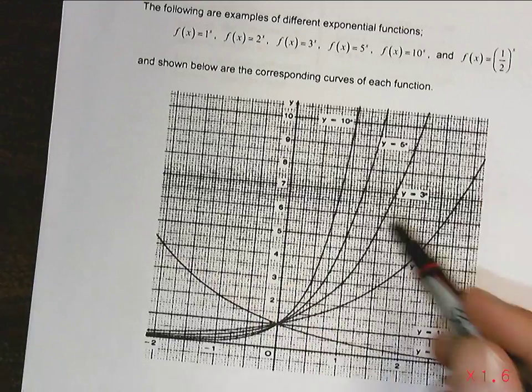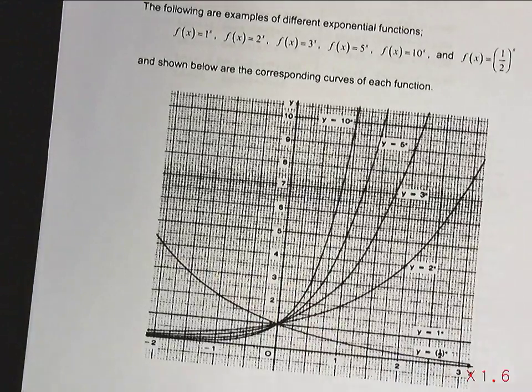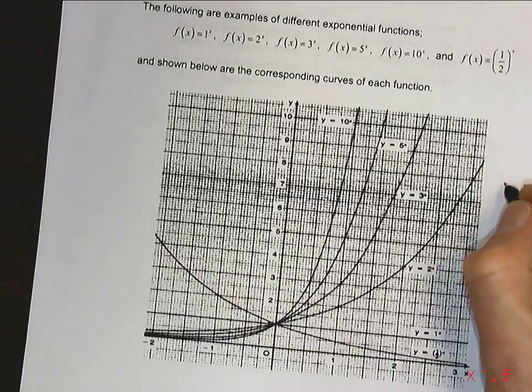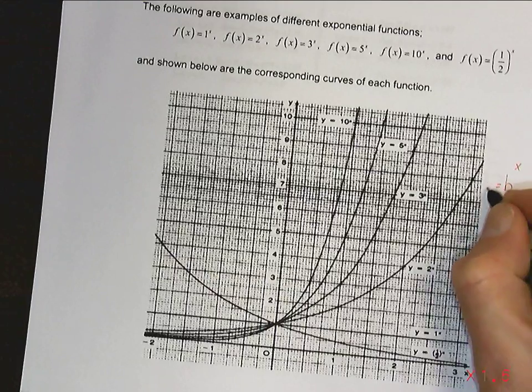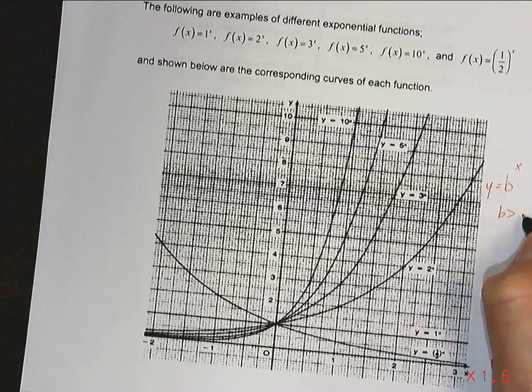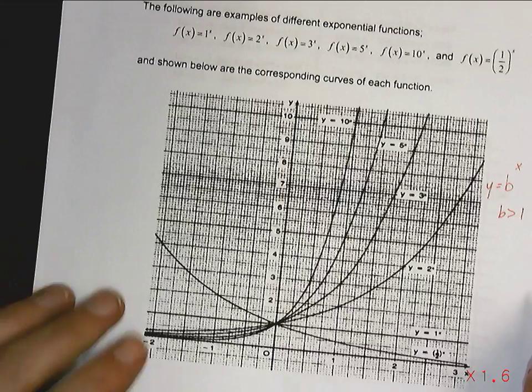So there's two groups of this family of functions, and they are either going to be ones where it's b to the x, where b is greater than 1, and they're all going to be increasing functions,